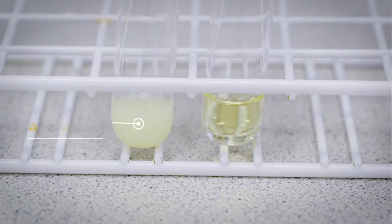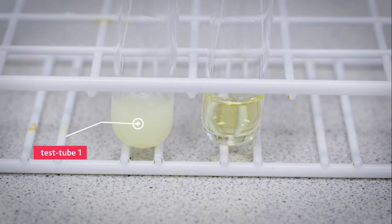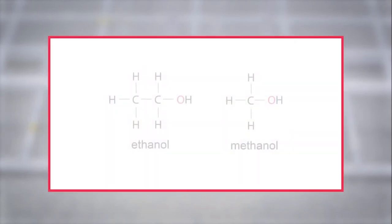In test tube 1, a pale yellow precipitate forms. In test tube 2, no precipitate forms. Ethanol contains a methyl alcohol group, giving a positive result. Methanol does not have a methyl alcohol group and gives a negative result.